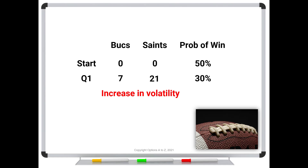That increase in volatility is important — it's beneficial for both teams. In the world of options it means the stock price might go higher or lower. In football terms, maybe it was pouring rain and it stopped. So the Bucks have a better chance of scoring, and yes, so do the Saints. Instead of dropping from 50% to 30%, maybe you go from 50% to 45% — not as good as 0-0, but because of the volatility increase, not as bad as 30%.